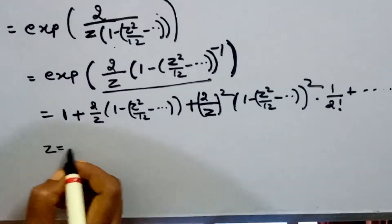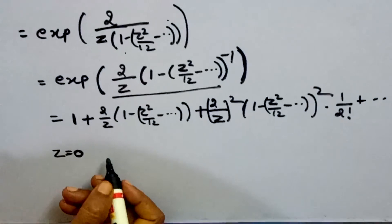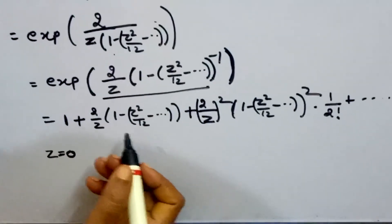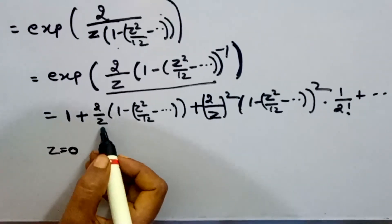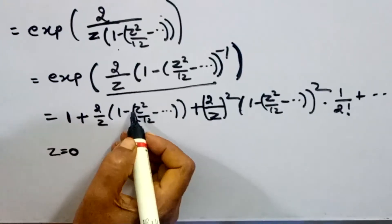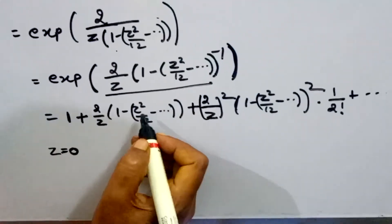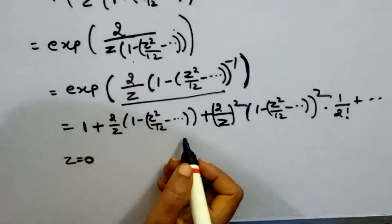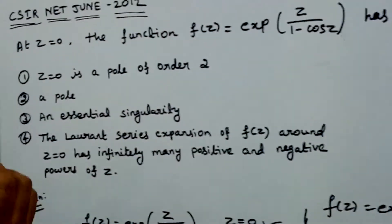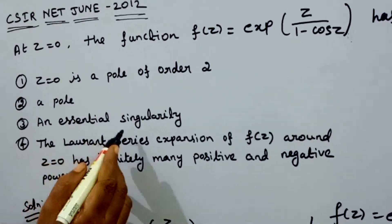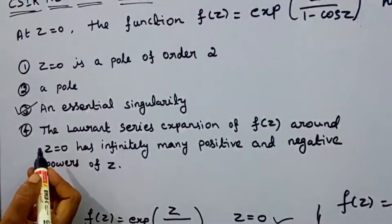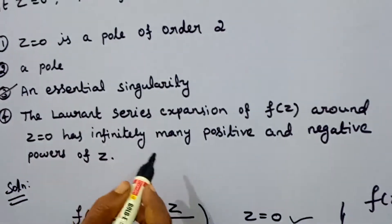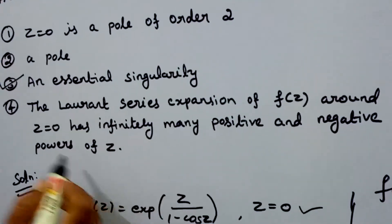So, if z is equal to 0, then the singular point is an essential singularity. In this series, there are negative powers of z and positive powers of z, and the infinite number of terms exists. The negative powers of z include 1 over z terms, and positive powers exist in the numerator as well. The infinite number of both positive and negative powers exist. Therefore, the third option — z equal to 0 is an essential singularity — is correct. The fourth option — the Laurent series expansion of f around z equal to 0 has infinitely many positive and negative powers of z — is also correct.